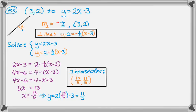Now, to actually answer the question, I need to find the distance from this intersection point to the given point. The distance is square root of 3 minus 13 fifths squared, plus 2 minus 11 fifths squared. And now I just need to do some arithmetic.